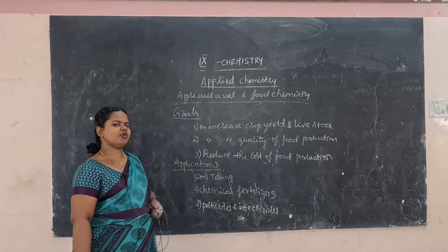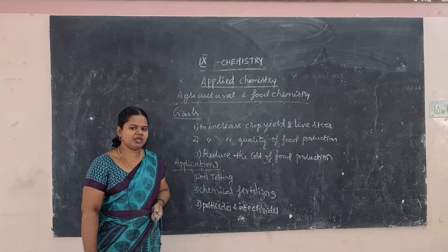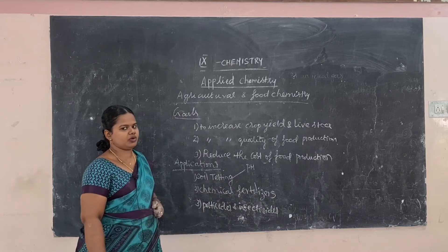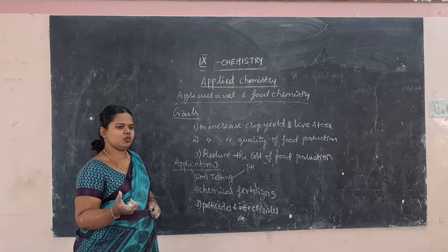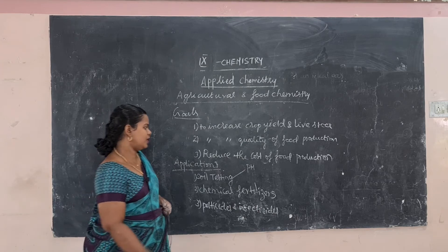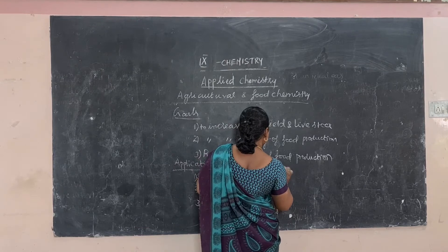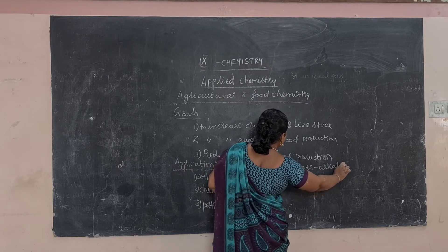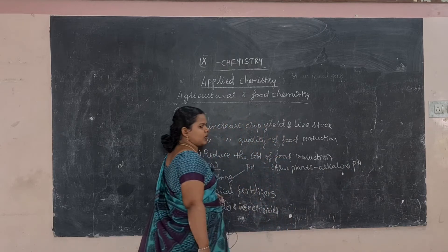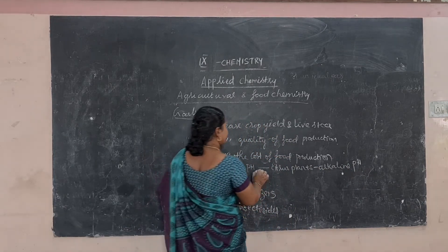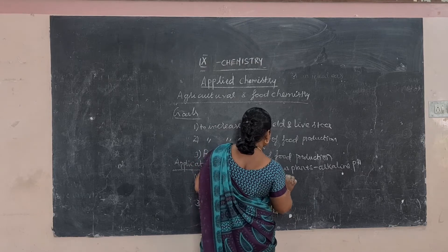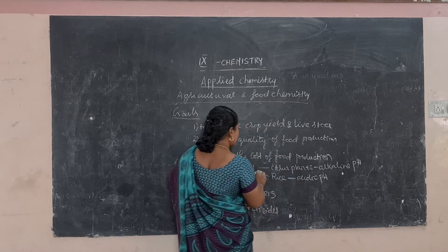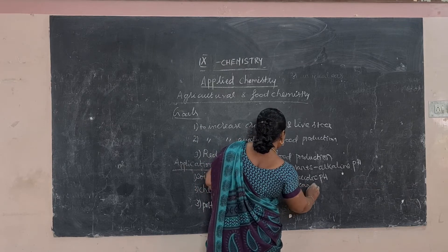For soil testing, before doing crop cultivation, we have to test the soil pH — that is hydrogen ion concentration. For a particular soil, a particular plant will give good yield. For example, citrus plants require alkaline pH; rice requires acidic pH; and sugarcane requires neutral pH.